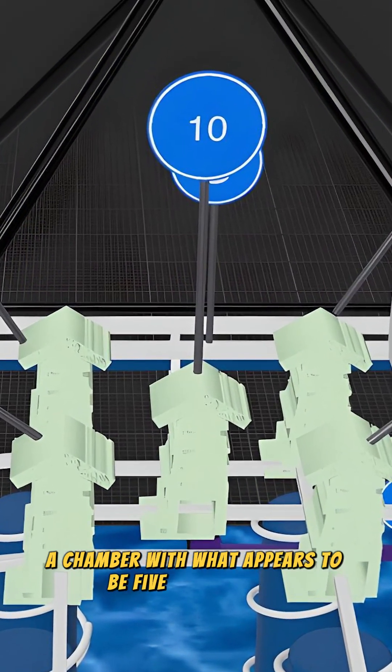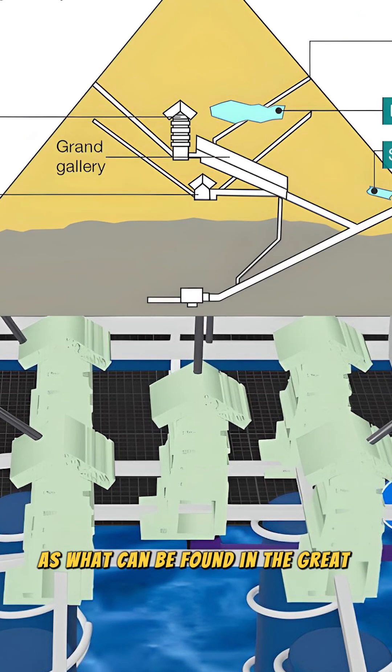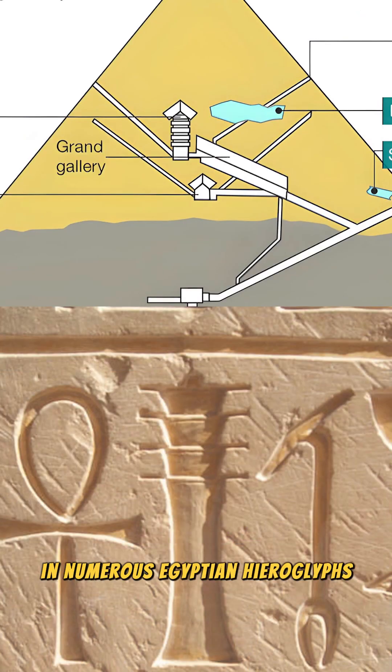A chamber with what appears to be five djed pillars was found in the same design as what can be found in the Great Pyramid and numerous Egyptian hieroglyphs.